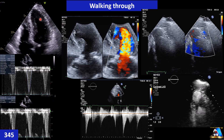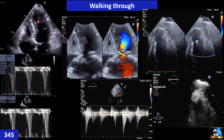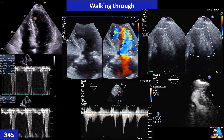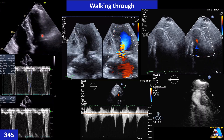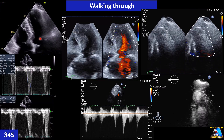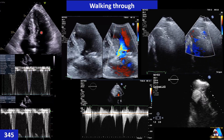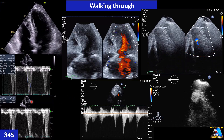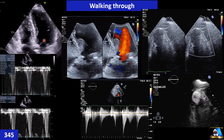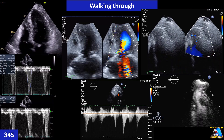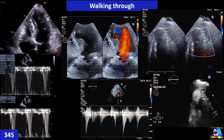To confirm, we do pulsed-wave Doppler and 'walk through' the LV — especially with concentric hypertrophy — from apex to LVOT. We place the sample volume at different levels: first at the apex, then a little lower, then mid-cavity, then basal, and finally at the LVOT — four to five steps — to find where the highest velocity is. Here at this level we have higher velocity close to 2 m/s.